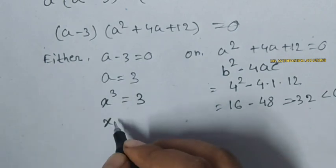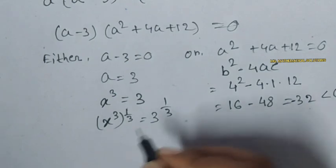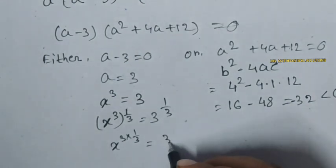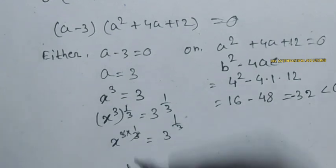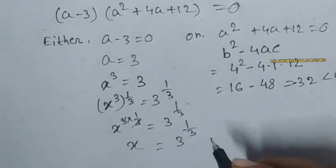So now we exponent both sides 1 by 3. So x to the power 3 times 1 by 3, 3 to the power 1 by 3, 3 cancel. So x equal to 3 to the power 1 by 3. This is the final answer.